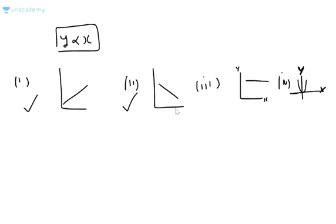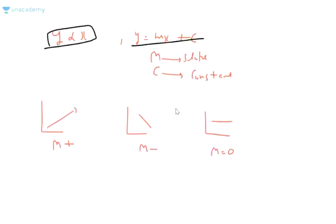Y is directly proportional to x. Y equals to mx plus c. M is the slope, c is constant. M is positive, M is negative, M is 0.